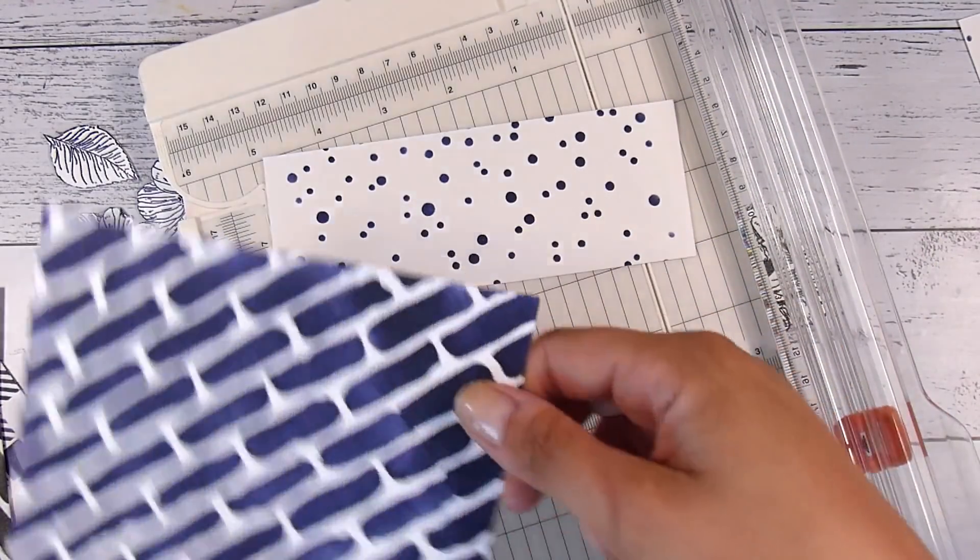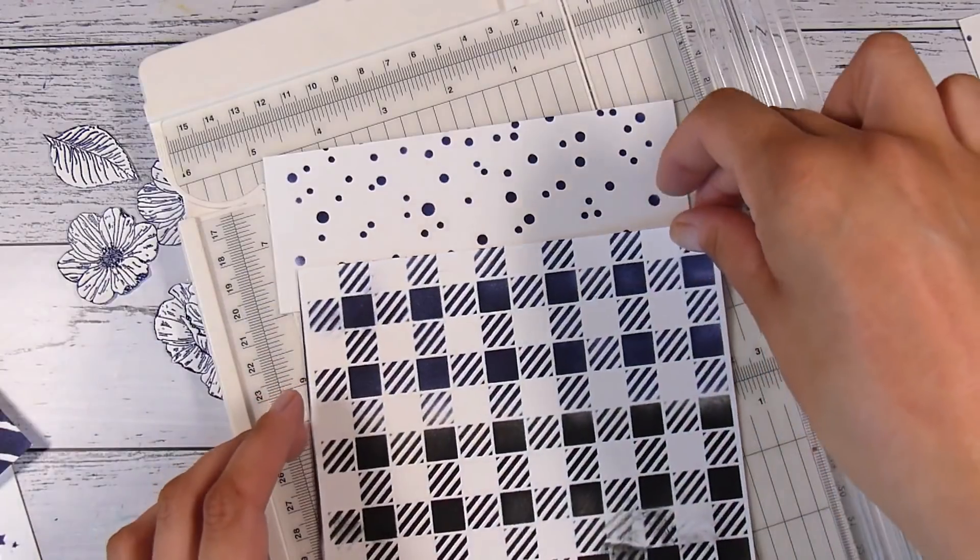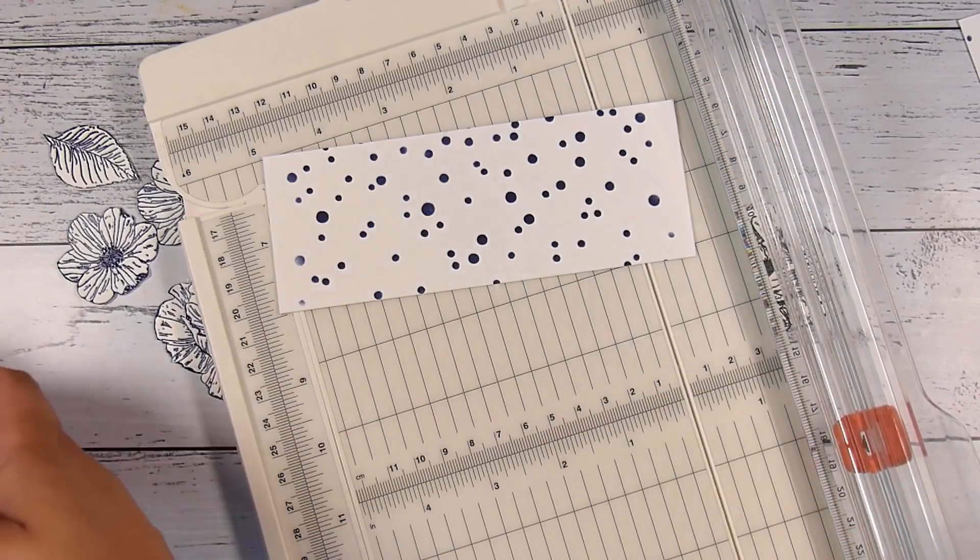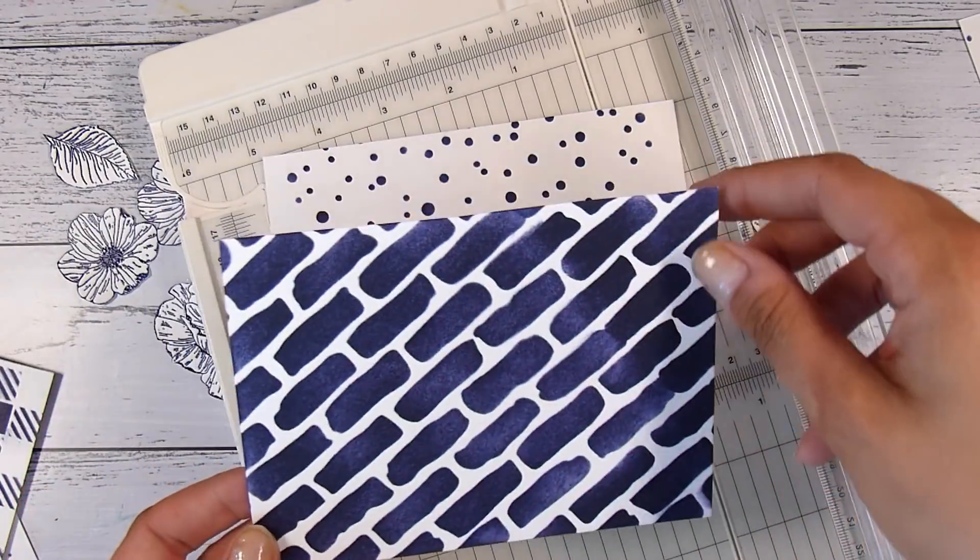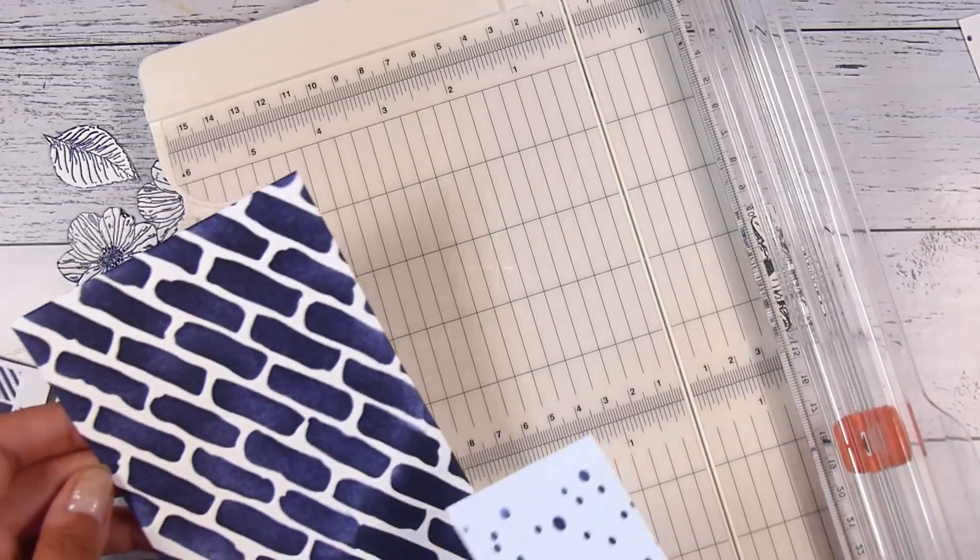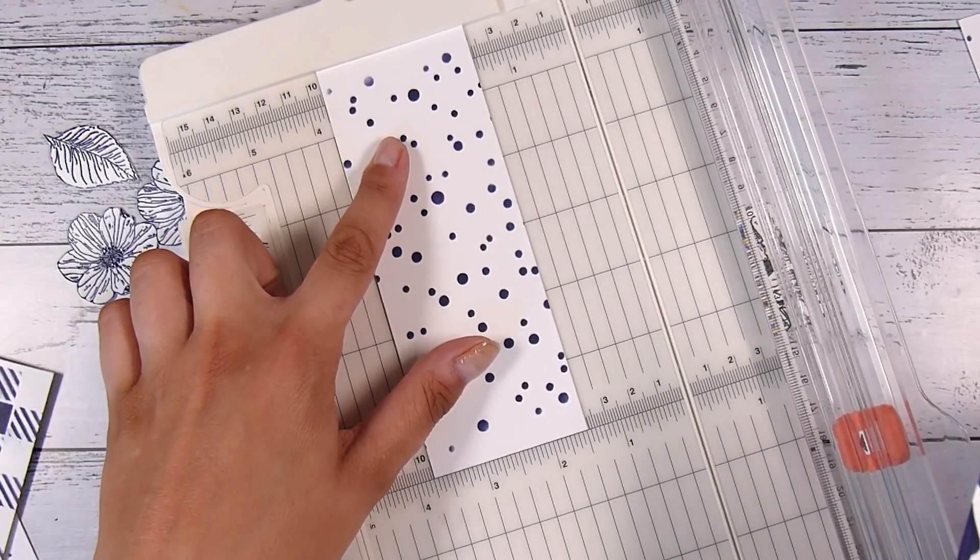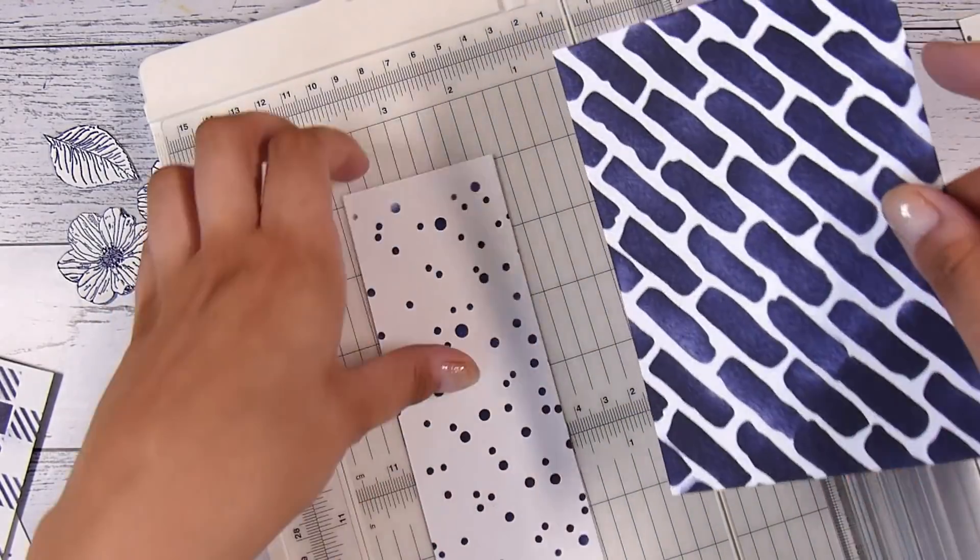I just picked some patterns that went together, maybe even didn't go together. I tried to pick a bolder pattern that was going to go through the middle, then a lighter pattern at the top. Then I was planning to have a plain white piece of paper down the bottom where I would be able to stamp my sentiment.